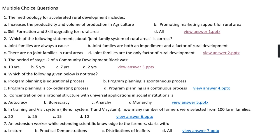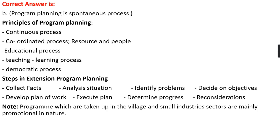Question number four: Which of the following is not true? Option A, program planning is an educational process; option B, program planning is a spontaneous process; option C, program planning is a coordinating process; option D, program planning is a continuous process. The right answer is option B, that is program planning is a spontaneous process.